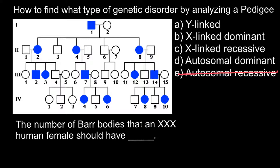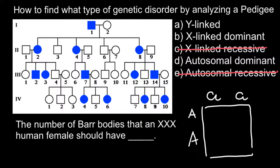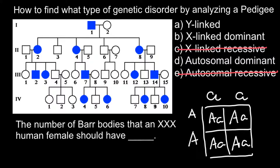It cannot be autosomal recessive. If person one were homozygous recessive, his genotype would be 'aa', and if we assume his partner is homozygous normal with genotype 'AA', then 100% of the progeny would be heterozygous — meaning 100% would be phenotypically normal carriers.